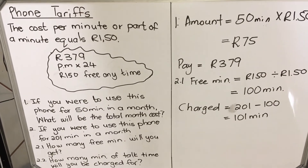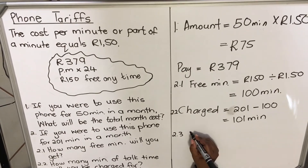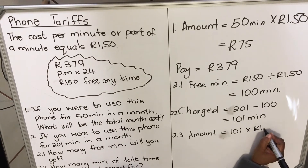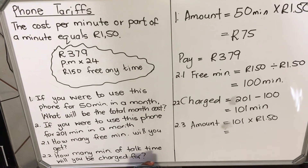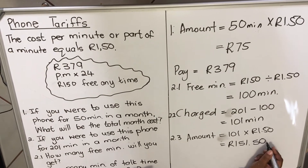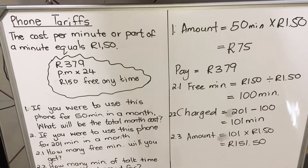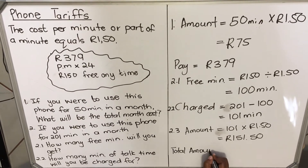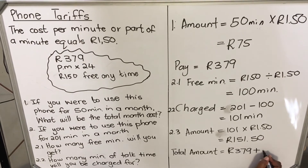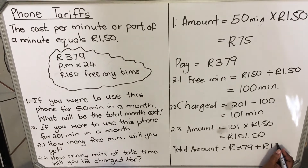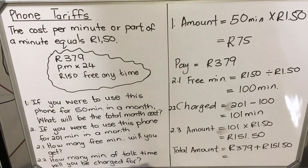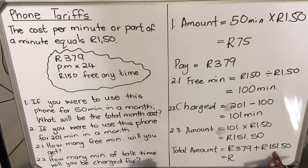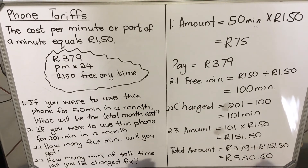The next question asks: how much are you going to pay for that month? The amount equals 101 times 150 for each minute, which comes to 151.50. But this is not the total amount — remember that each month you pay a subscription fee of 379. So the total amount will be 379 plus 151.50 for the extra time beyond your free minutes, giving you a total of 530.50.